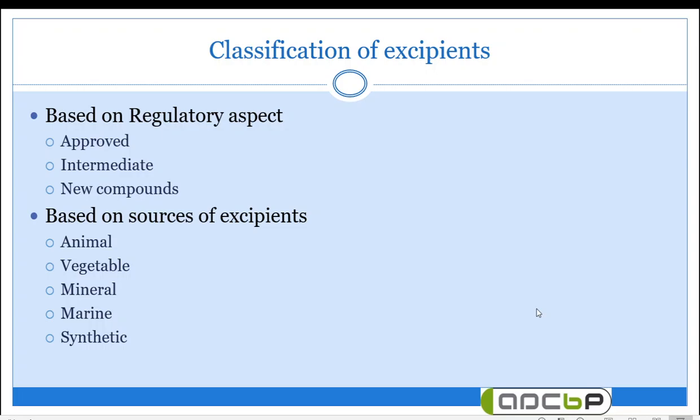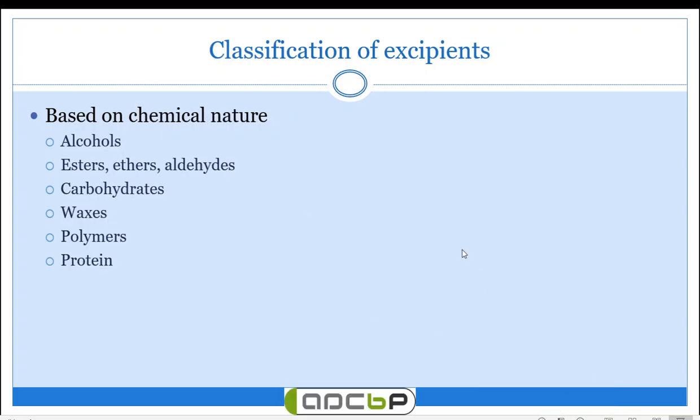Vegetable or plant source excipients include cocoa butter, peppermint oil, and vanilla essence. Mineral source excipients include bentonite, kaolin, and paraffins. Marine source excipients include agar, chitin, chitosan, and carrageenans. Modern synthetic excipients like polyethylene glycols and polysorbates are prepared by synthesis in a chemical laboratory.